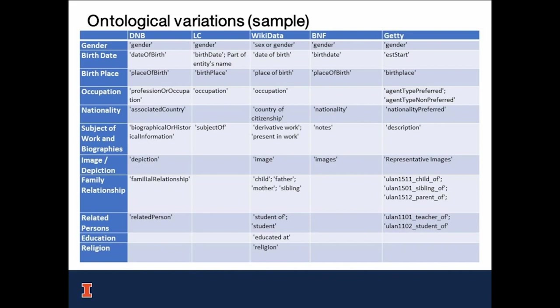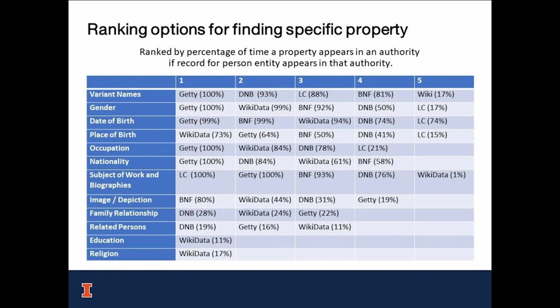In terms of ontology and granularity, we found that the labels of the same types of properties differ across selected authorities, and the granularity of these authorities varies. Wikidata and Getty have more granular information about relationships, while DNB is very general. In addition, BNF conflates several otherwise distinct property values in the general-purpose 'knows' property. This table also reveals that Wikidata has some unique and detailed information about a few authors, such as education and religion. Ranking by the percentage of times a property appears in an authority gives us the most reliable source of each property for our corpus.